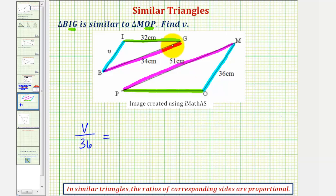and we want to find a pair of corresponding sides that we know the lengths of both sides, which would be side BG and side MP.